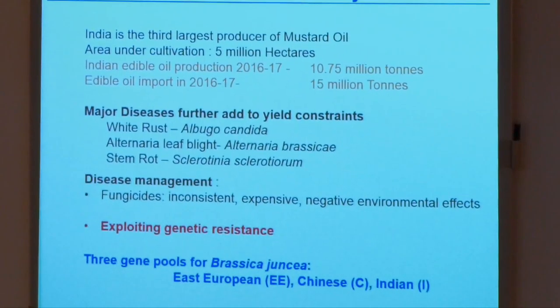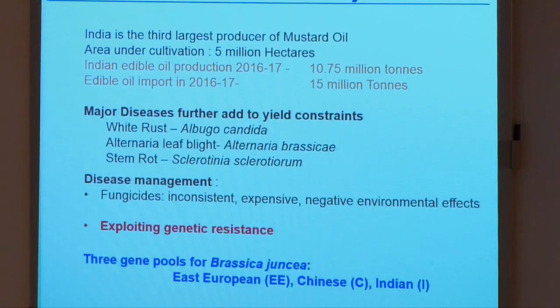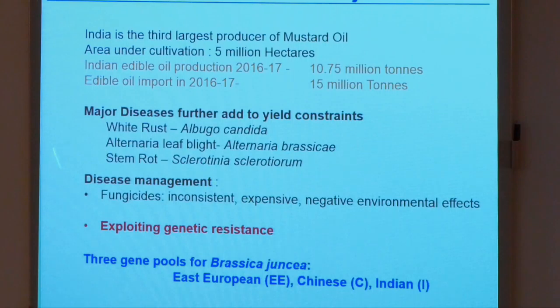Majority of the time these diseases are tackled using fungicides, as Professor Odila also mentioned. But these fungicides are inconsistent in their response. Besides inconsistency, they are expensive and they have negative or detrimental effects on the environment. So the best approach for disease improvement would be to exploit the genetic variation that exists within the crop species towards improving resistance.